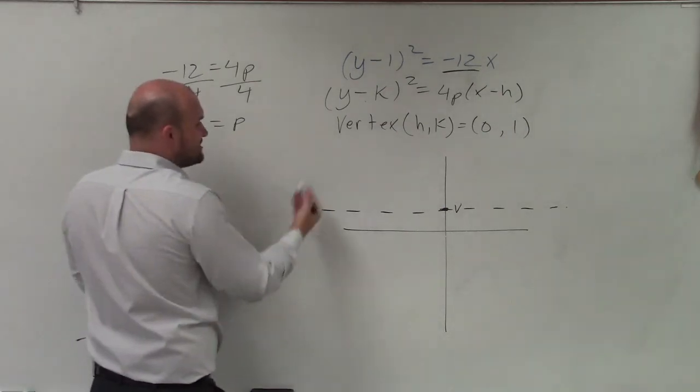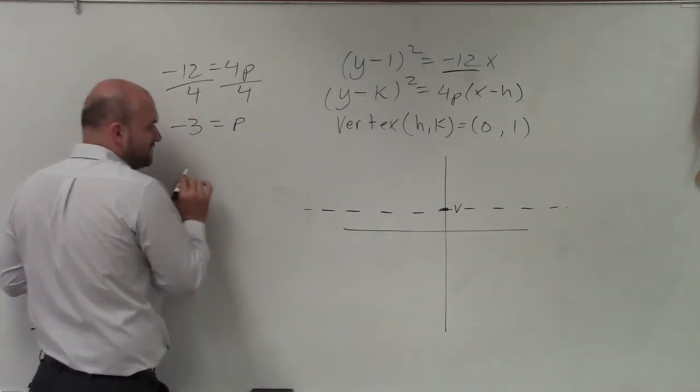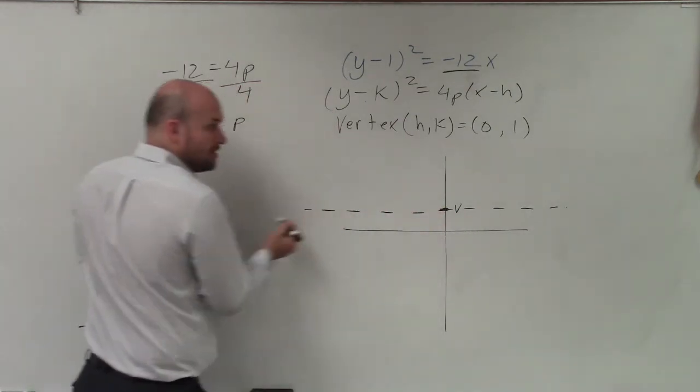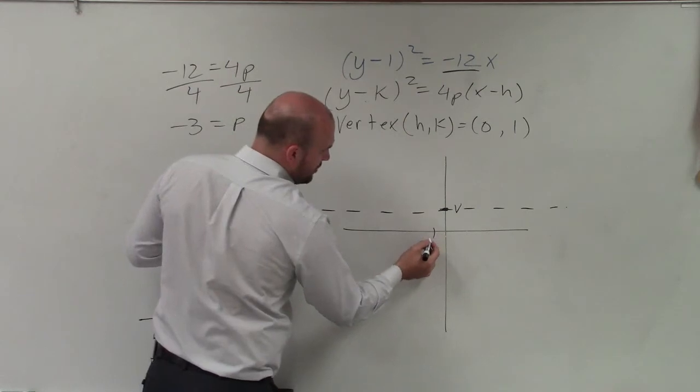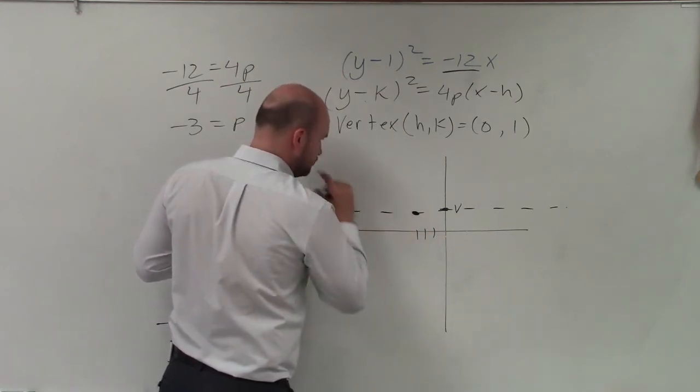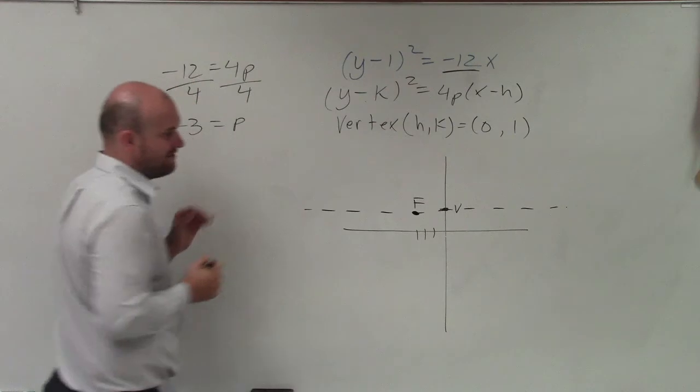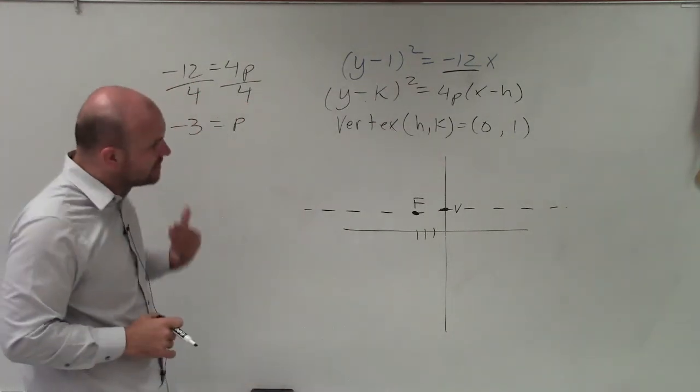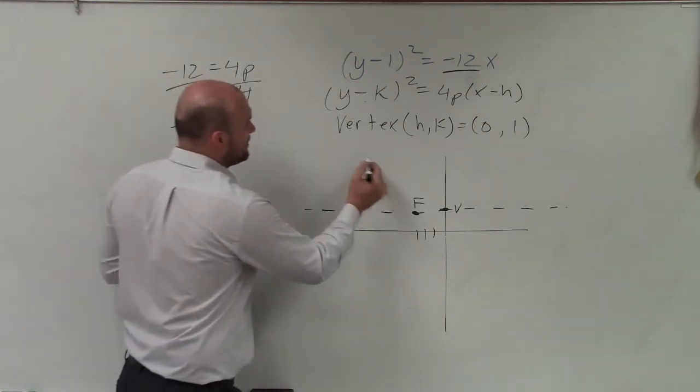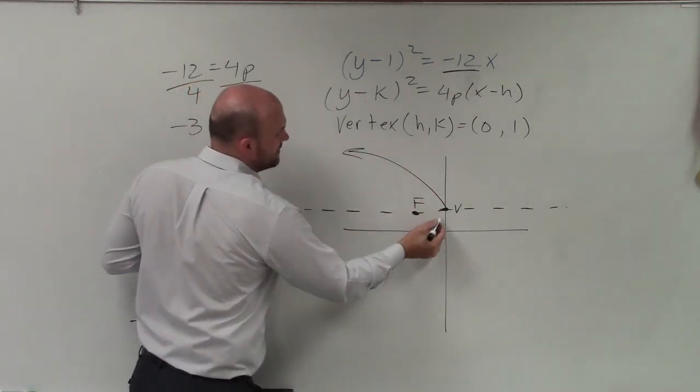So I have negative 3 equals p. Therefore, the distance from the vertex to the focus is negative 3. Going along my axis of symmetry, negative would be to the left. So I go to the left 1, 2, 3 units. And you could say that is now going to be my focus. So now, since I have my focus to the left, I know my parabola is going to be going in this direction.